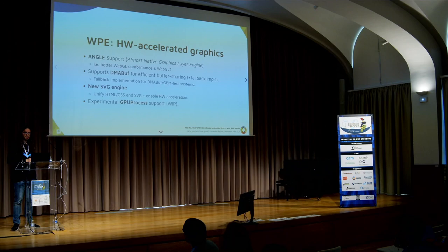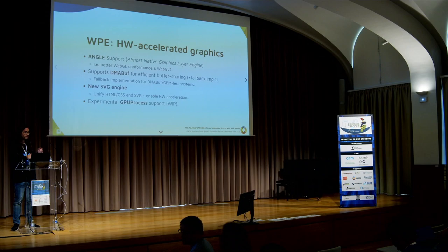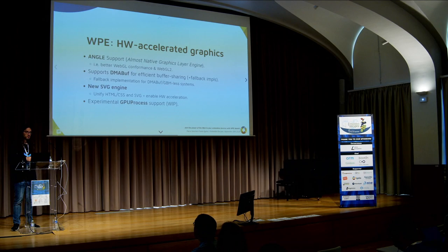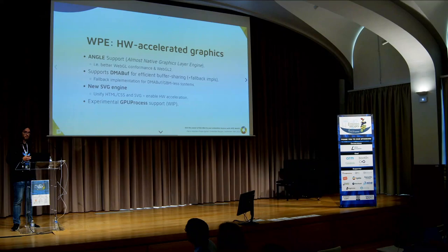Since the 2.38 release, we support DMABuf - a feature on recent kernels (5.x) that allows very efficient buffer sharing with zero copy by moving a file descriptor around. Not all devices have the hardware/software combination to use DMABuf, so in the release that just came out a few days ago, we added a fallback implementation in case DMABuf isn't available. If you don't have DMABuf it won't be fast, but like 32-bit JavaScript, it will work.